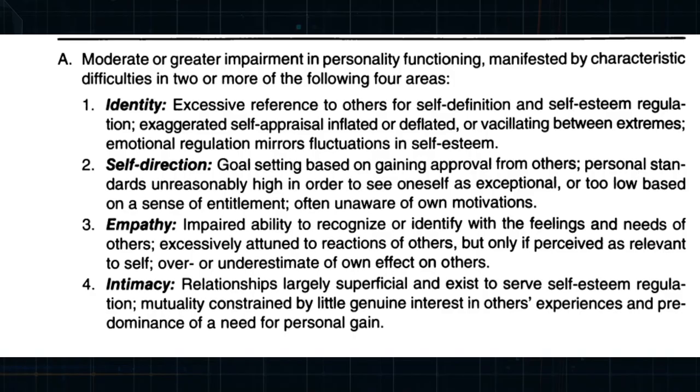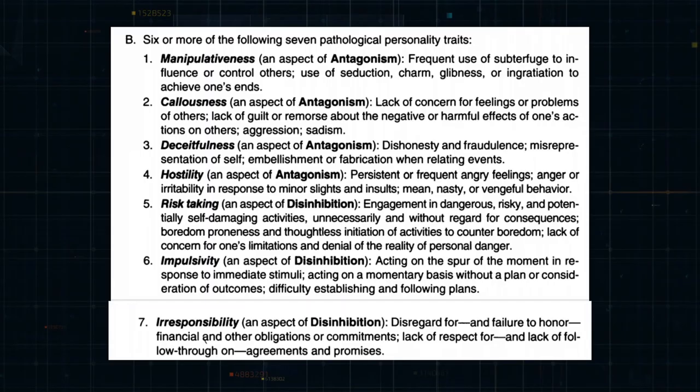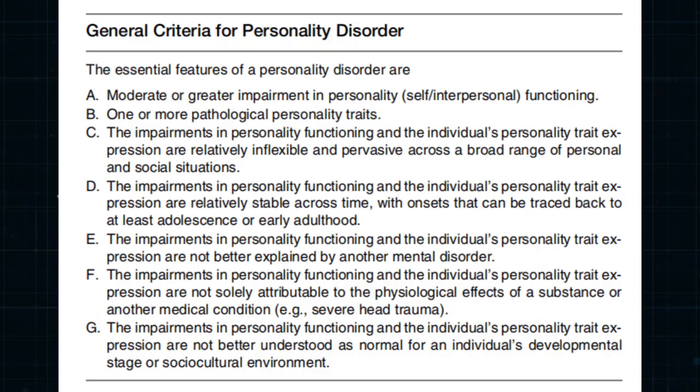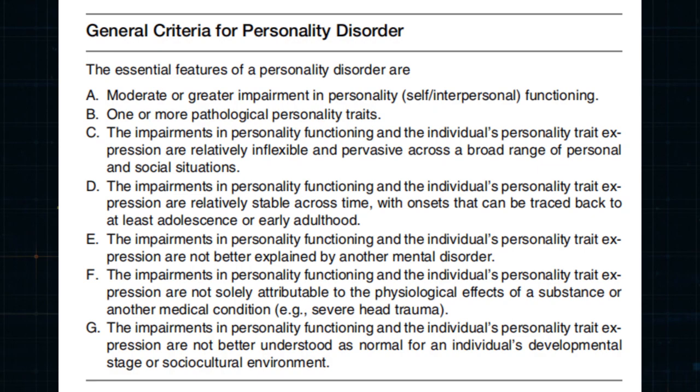Now that Walt has met the requirements for Criterion A for both NPD and APD as well as Criterion B for NPD, we can now move on to the seven pathological personality traits that are a part of Criterion B for APD and finish covering the rest of the GCPD in the next video. Feel free to click on the video on screen to continue to part two.